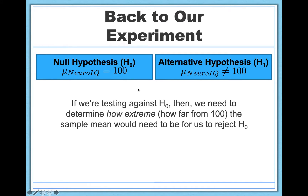So for testing against this null hypothesis, we need to determine how extreme of a result we would need to find in order for us to be convinced that we're looking at a real effect. In this case, how far from 100 — the population average IQ — would we need to observe in our sample of people who took neuro IQ for 30 days in order for us to reasonably reject the null hypothesis and reasonably say we think there is a real effect?